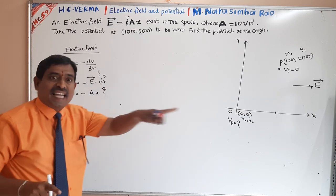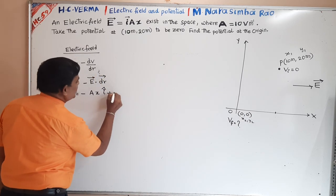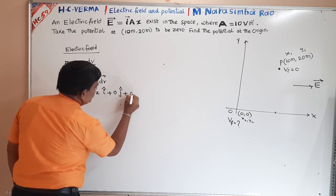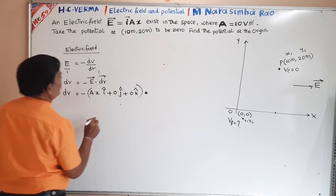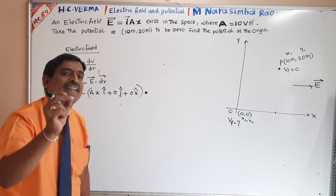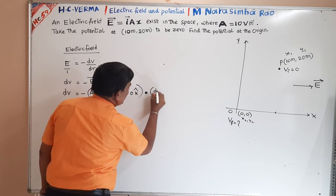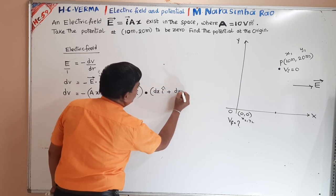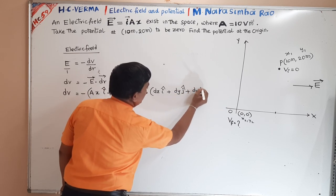Since the electric field is only along the x-axis, I am writing it as AX·î + 0·ĵ + 0·k̂. The small length element dR is written as dx·î plus dy·ĵ plus dz·k̂.